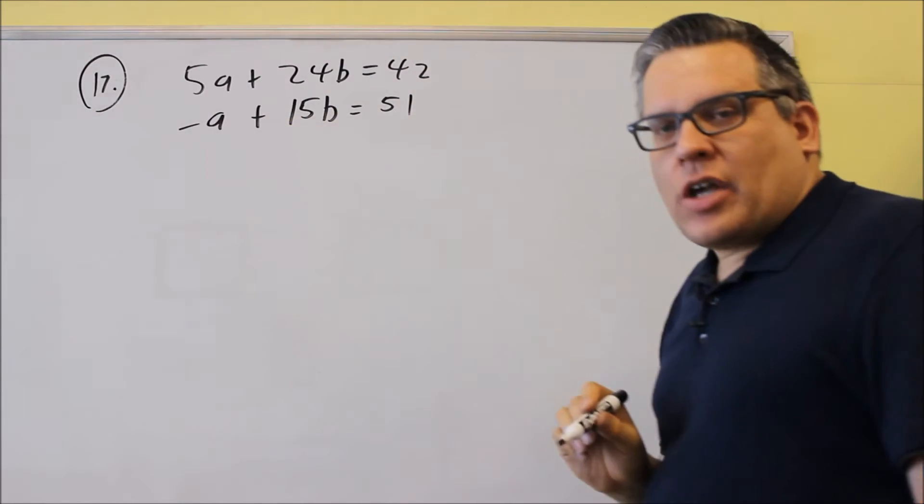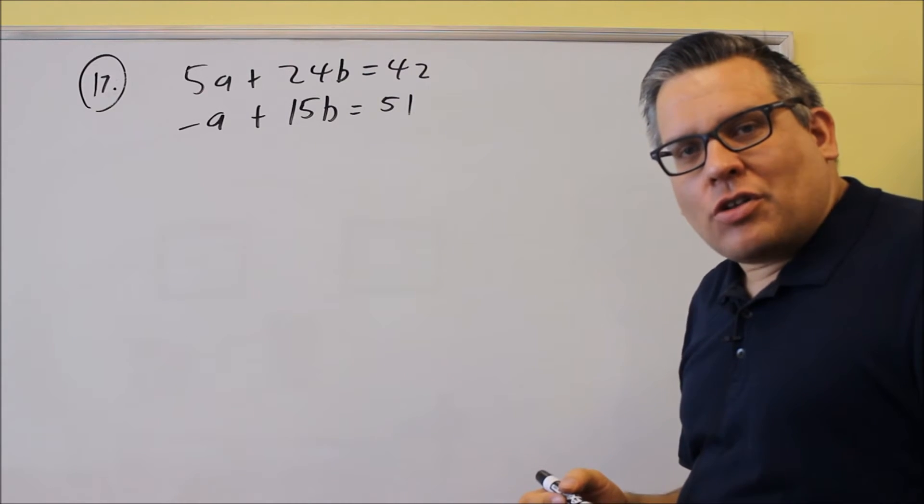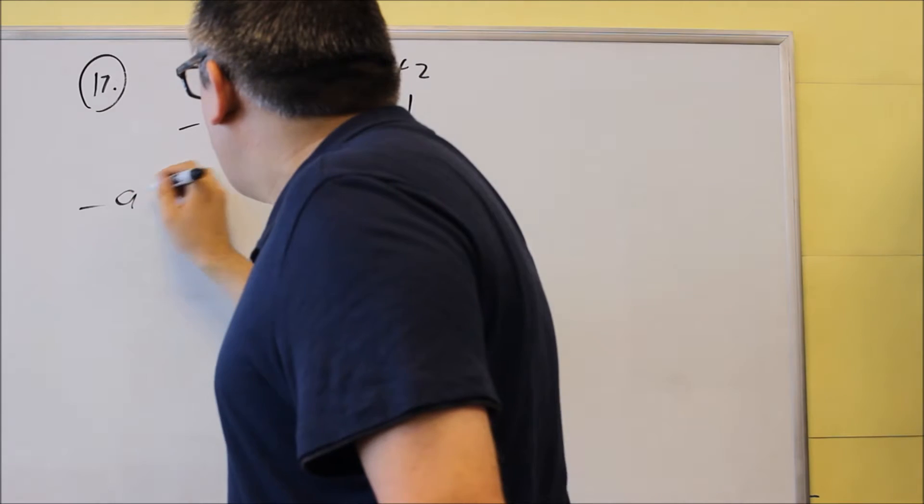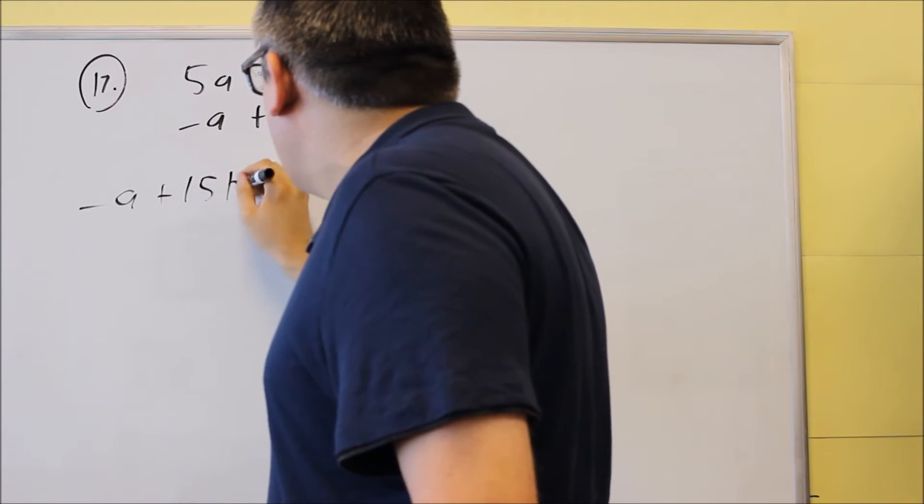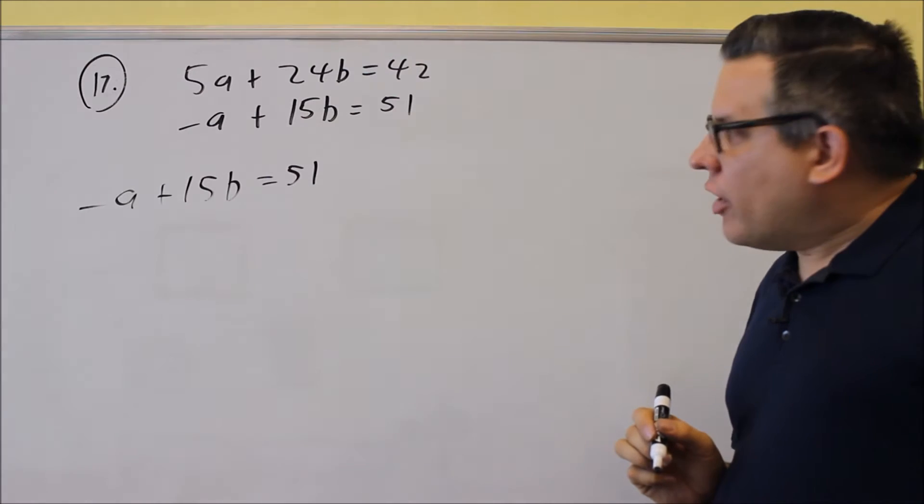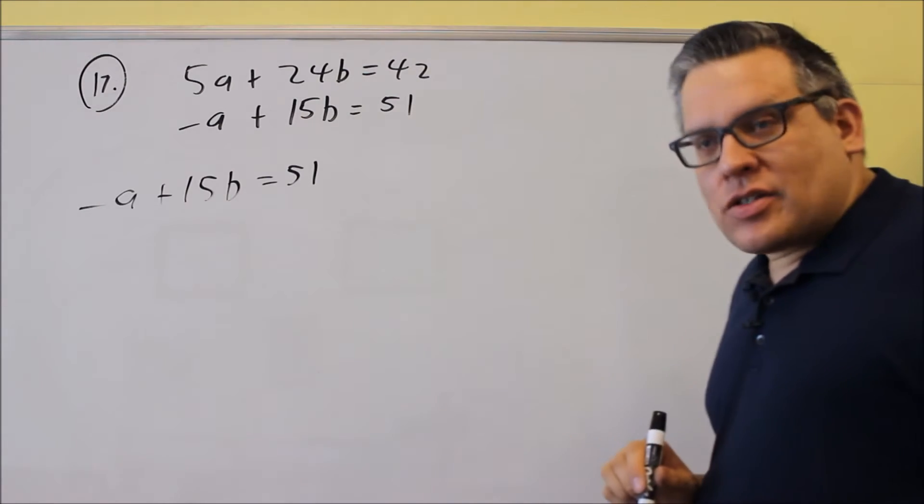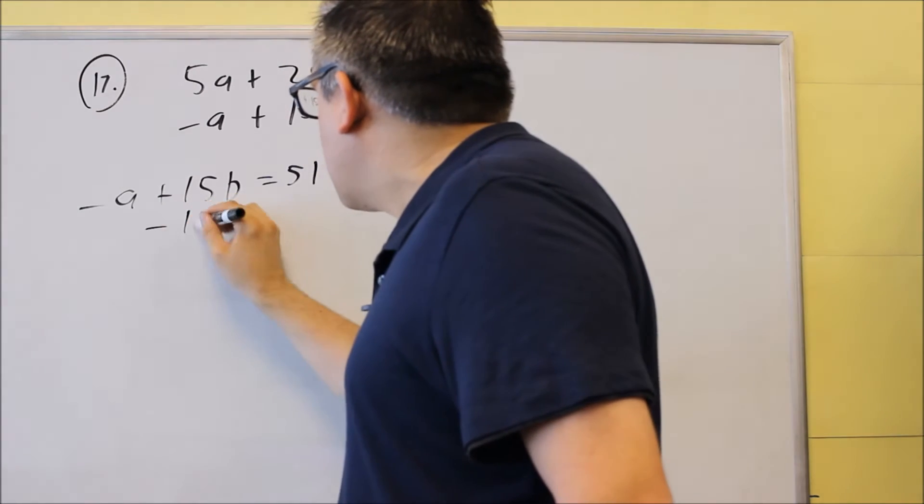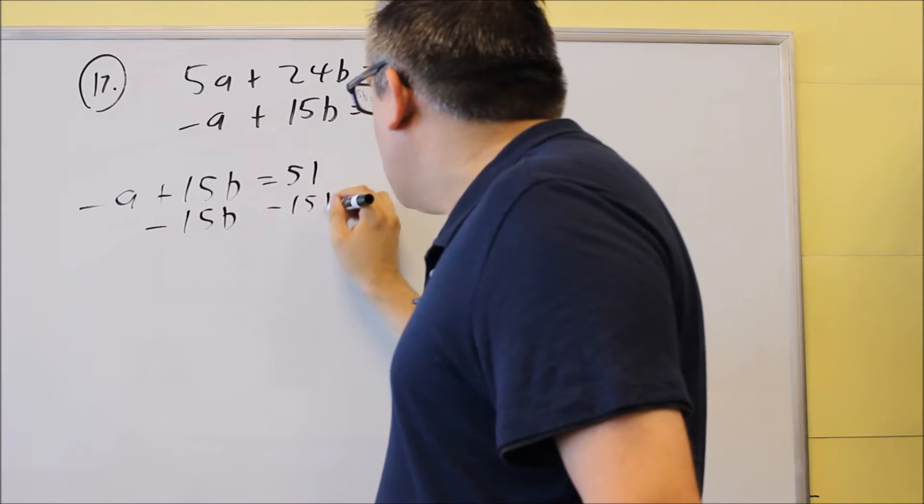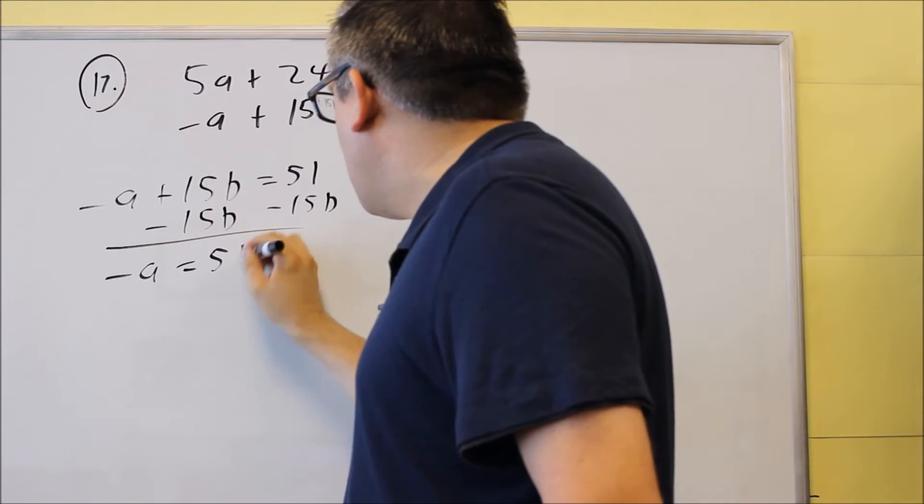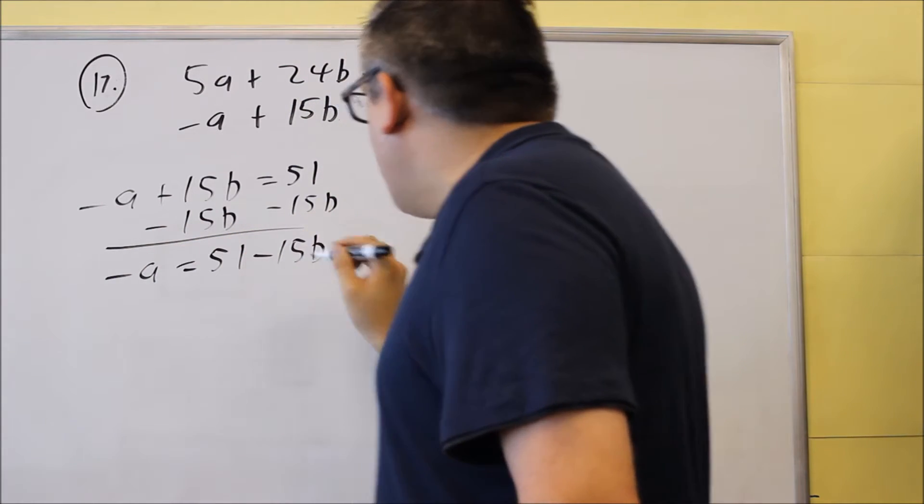If I had like a two or something else, then maybe I wouldn't want to do substitution on this one because then I'd have fractions as part of my answer. But this one, I won't get a fraction if I solve for a. So here, I'm going to go ahead and start with the second equation there because it has an a kind of isolated by itself and I want to solve for a. So what I'll do is I'm going to subtract 15b from both sides and I get negative a equals 51 minus 15b.